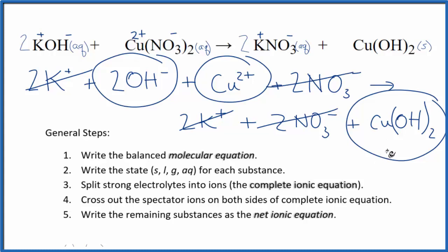Let me clean this up and add the states in. Then we'll have the net ionic equation for potassium hydroxide plus copper 2 nitrate.